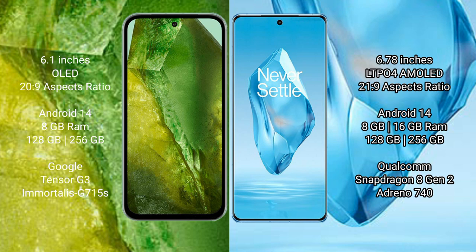Google Pixel 8a runs on the Android 14 operating system. OnePlus 12 Power also runs on Android 14. Google Pixel 8a comes with 8GB RAM and 128GB to 256GB internal storage, powered by the Google Tensor G3 processor with an Immortalis-G715 GPU.